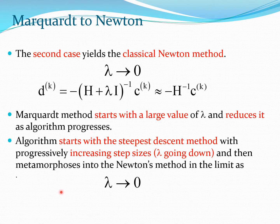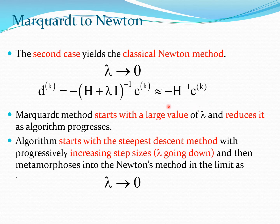Now let's look at the second case where lambda tends to 0. The H plus lambda*I term simplifies so that the H term dominates and therefore we discard the lambda*I term. You then get the Newton method, and the step size is 1. So this is the classical Newton method.